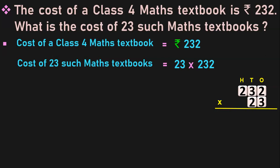Begin the multiplication from the 1's place: 3 into 2 is 6; 3 into 3 is 9; 3 into 2 is 6. Next, we will have to put a 0 in the 1's place because the next step is to multiply 232 by 20. Since 2 is in the 10's place, we add a 0 in the 1's place. Then 2 into 2 is 4; 2 into 3 is 6.